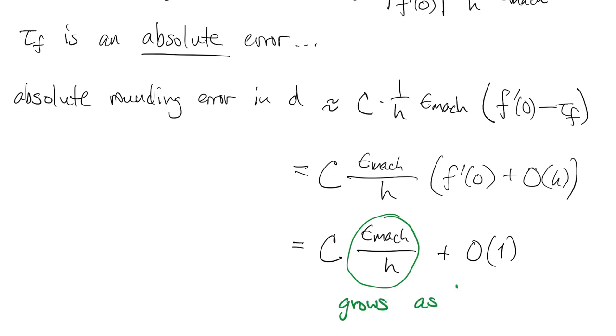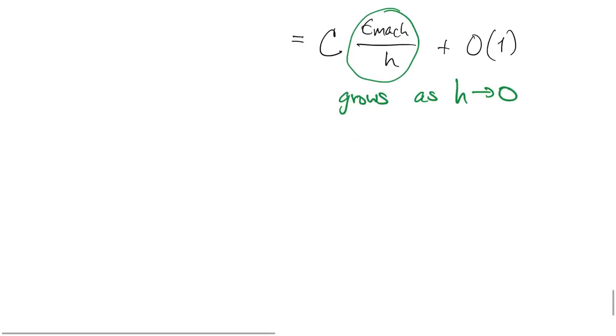And what's key is that the roundoff error grows as h goes to zero. So roundoff is growing while truncation is shrinking. So where do they meet?